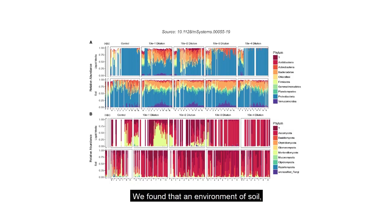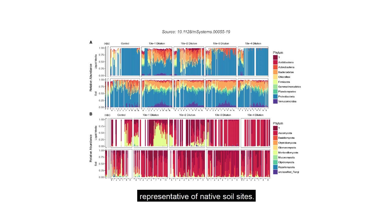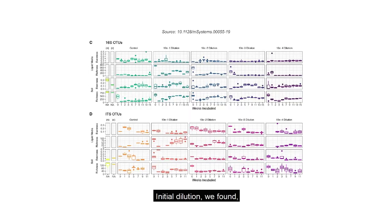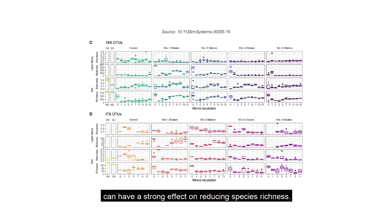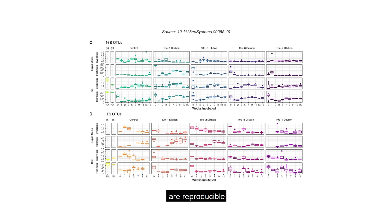We found that an environment of soil rather than liquid leads to a community of microbes that is representative of native soil sites. Initial dilution, we found, can have a strong effect on reducing species richness. Finally, we showed that such reduced complexity communities are reproducible and that the communities are stable across time.